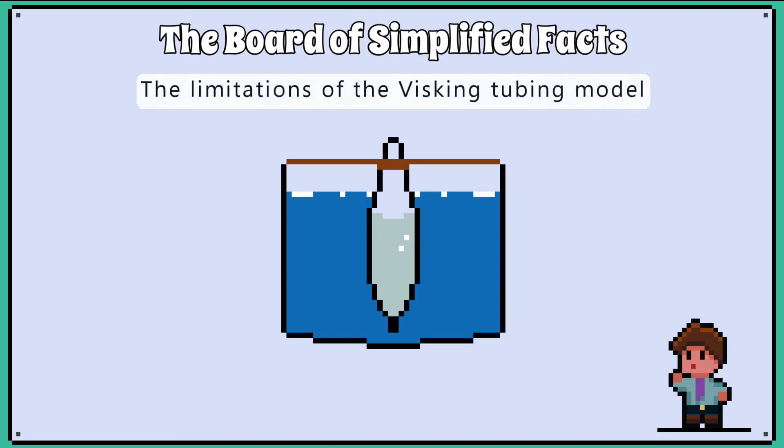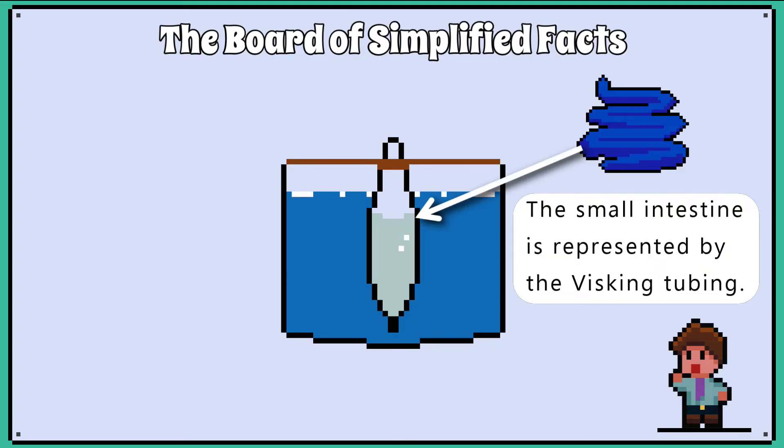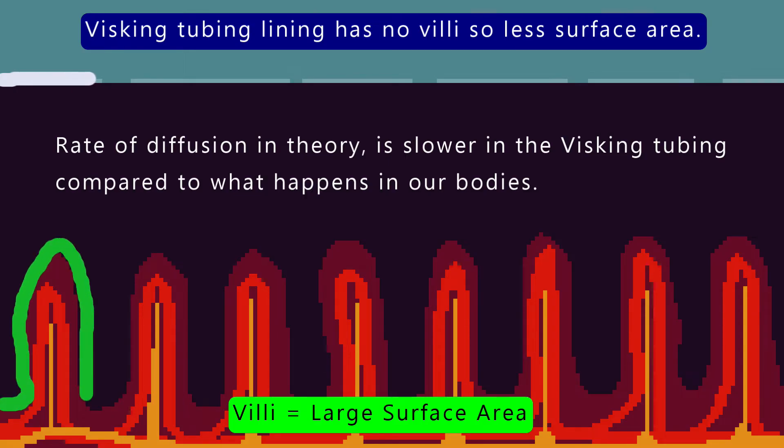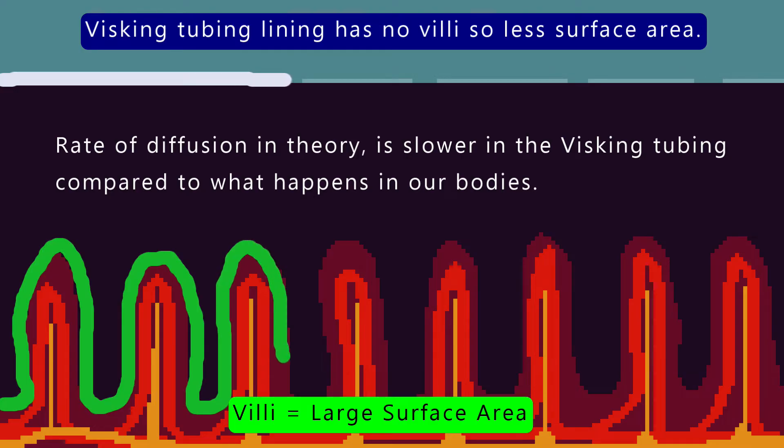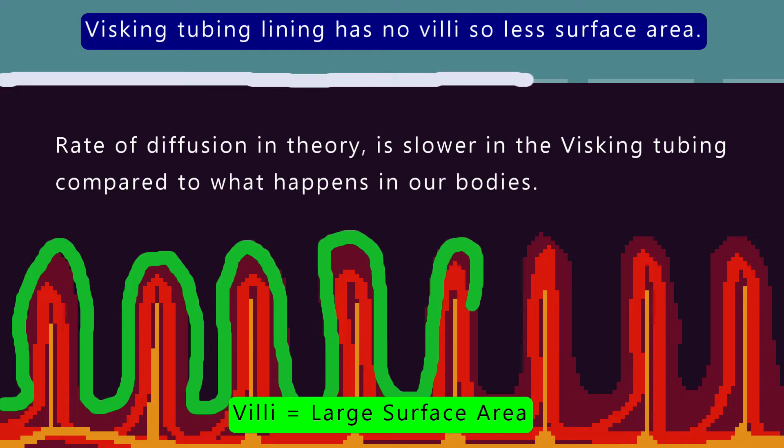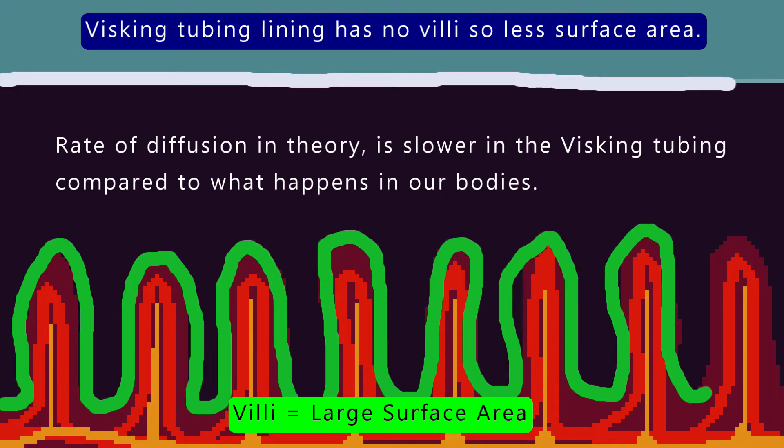This takes us to the limitations. The visking tubing represents the small intestine, but unlike the small intestine, the visking tubing has a much smaller surface area as it does not have villi, so the rate of diffusion in theory will be much slower.